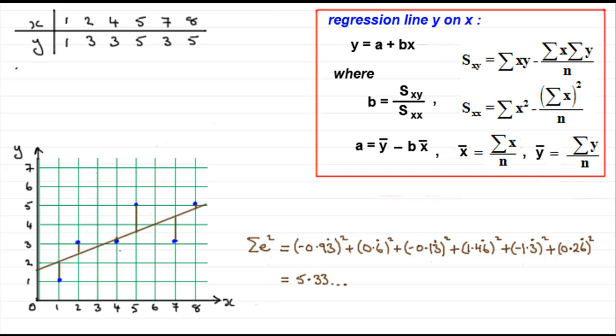So what we need to do is have summary statistics, just to save us time. Our summary statistics are often printed in questions. We've got here that the sum of all the x values across here, if we were to add up 1, 2, 4, 5, 7, and 8, it comes to 27. Similarly, if we were to add up all the y values, 1, 3, 3, 5, 3, and 5, it comes to 20.